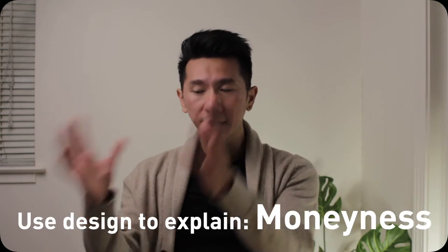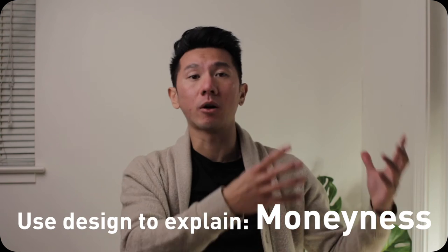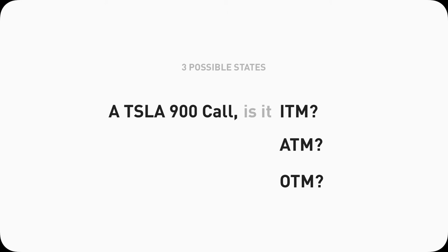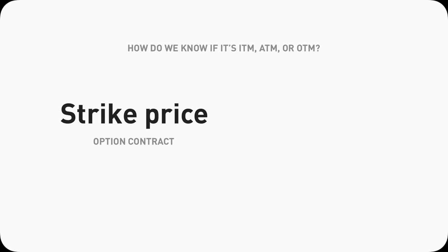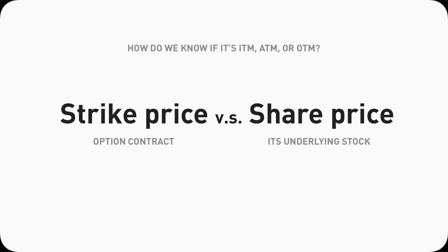Good morning everyone, my name is Justin. I'm a designer working in Silicon Valley, and I'm here today to use design to explain in-the-money, at-the-money, and out-of-the-money. From a high-level view, these are the three possible cases an option contract can be at any point from the moment it is listed to its expiration. What determines this state — or the moneyness of an option contract — is only two things: the option strike price and the underlying stock price.